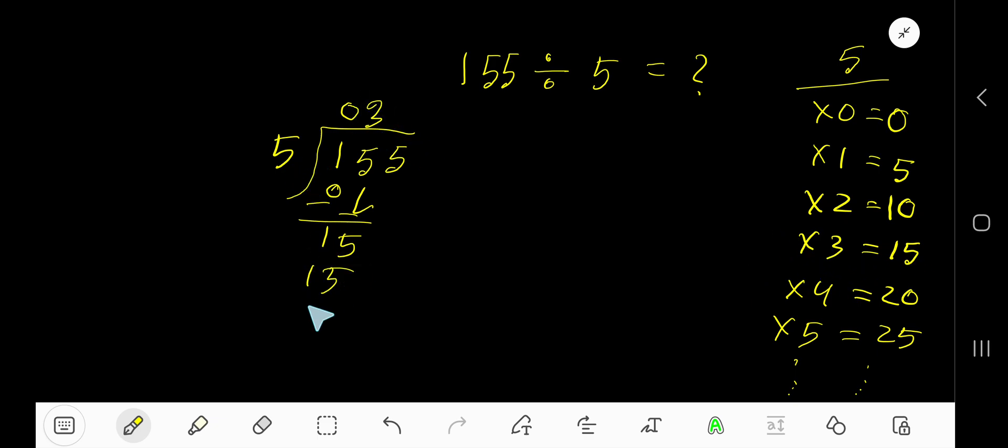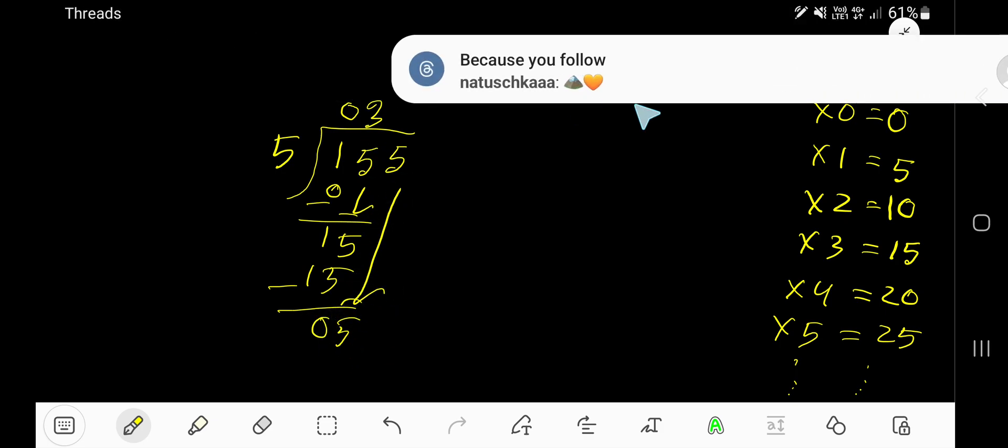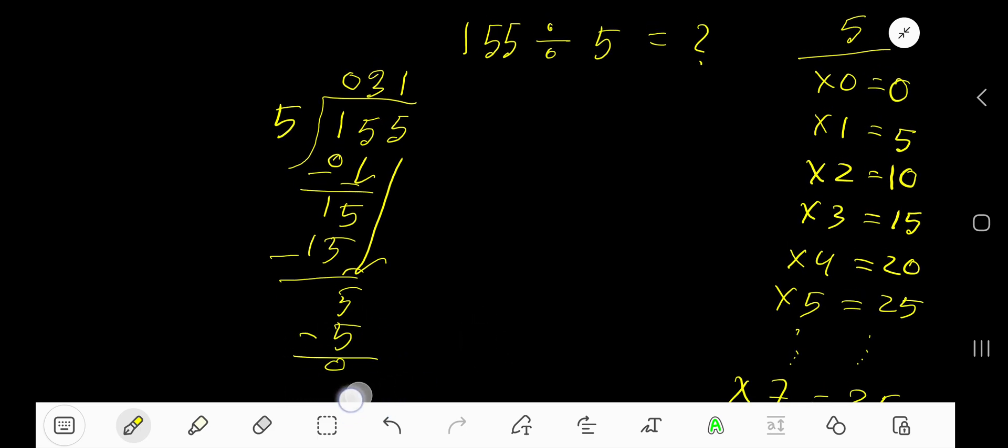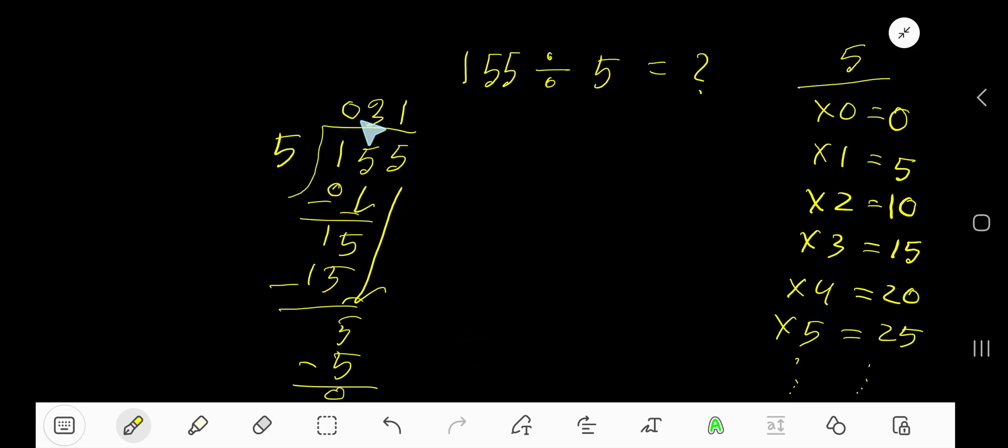3 times 5 is 15. Subtract to get 0. Bring down this 5. 5 goes into 5 how many times? 1 time. 1 times 5 is 5. Subtract to get 0. Since our remainder is zero, we are done. 31 is your answer.